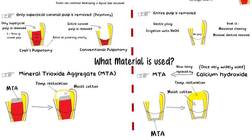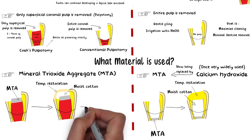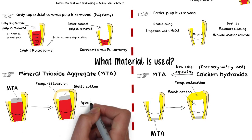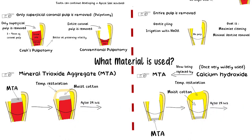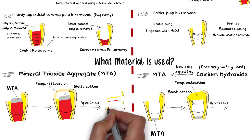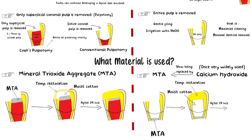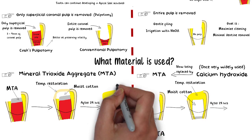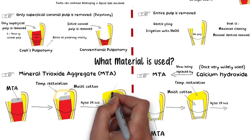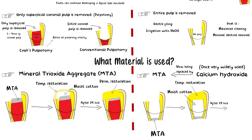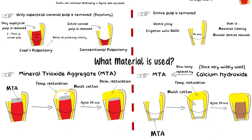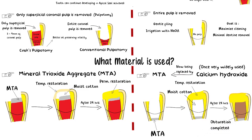The patient is recalled when the MTA has set, that is at least after 24 hours. If the MTA is set, then in the case of Apexogenesis, a final restoration is directly placed. Whereas in the case of Apexification, obturation is completed and the final restoration is then placed.